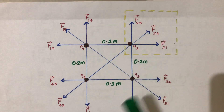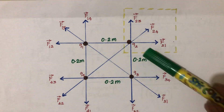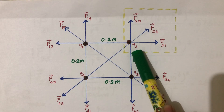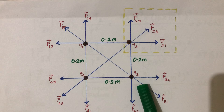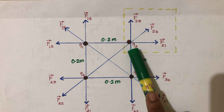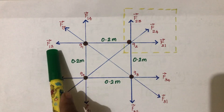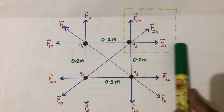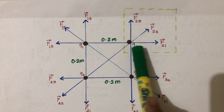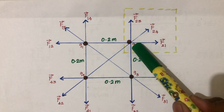The first step to solve this problem is to draw the vector diagram. We are going to calculate the total force acting on q2 — it will be the same for all charges because all charges are equal and kept at the same distance. The force on q2 due to q1 acts in this direction, because q1 is positive and q2 is also positive, so it is a repulsive force pushing outward.